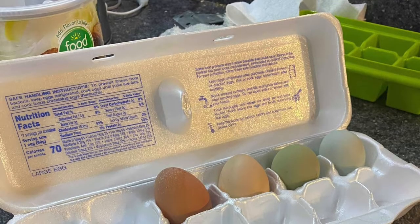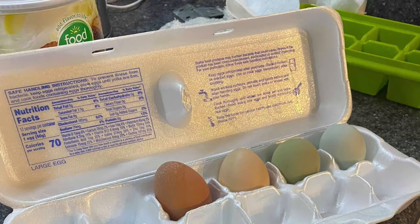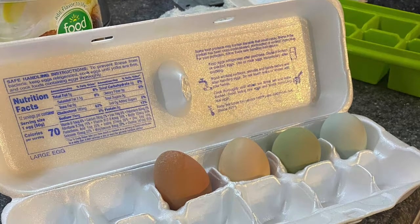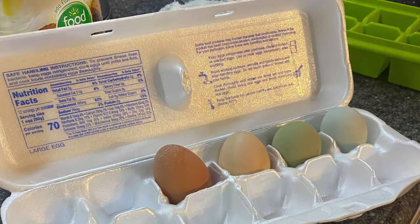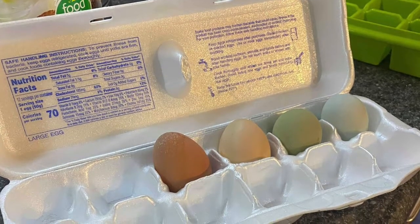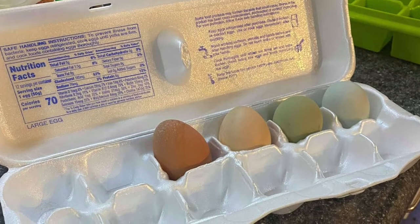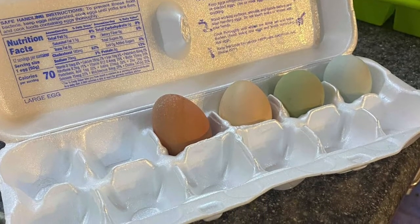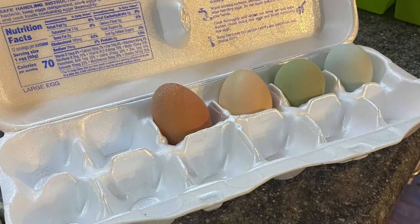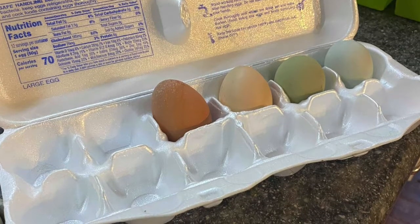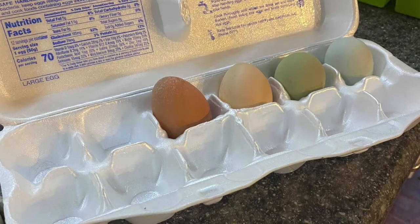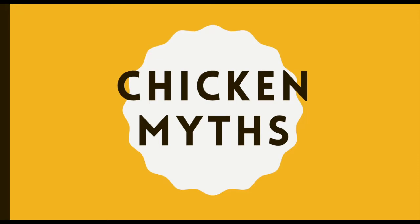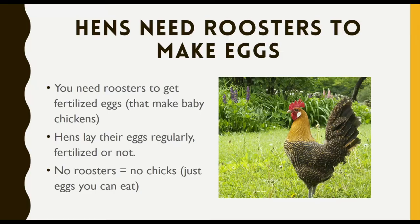Together, these four chickens lay four different colored eggs. The dark brown probably belongs to the Rhode Island Red, the olive colored belongs to one of the Easter Eggers, the light brown belongs to another of the Easter Eggers, and the blue belongs to the Americana.